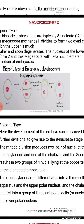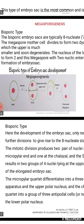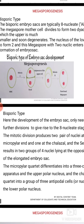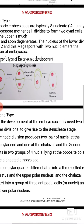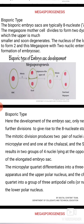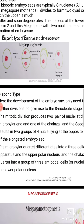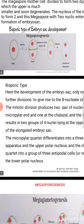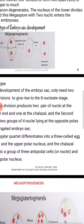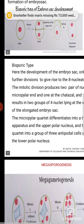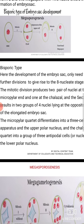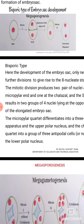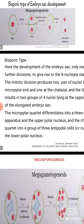Here the development of the embryo sac requires only two further divisions to give rise to the eight-nucleate stage. The first mitotic division produces two pairs of nuclei at the micropylar end and two at the chalazal end. The second results in two groups of four nuclei at the opposite poles of the elongated embryo sac. The micropylar quartet differentiates into a three-celled egg apparatus and the upper polar nucleus, while the chalazal quartet forms a group of three antipodals and the lower polar nucleus.